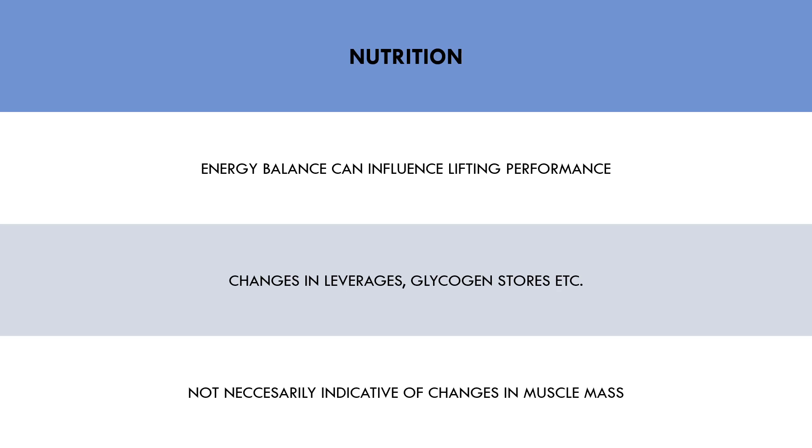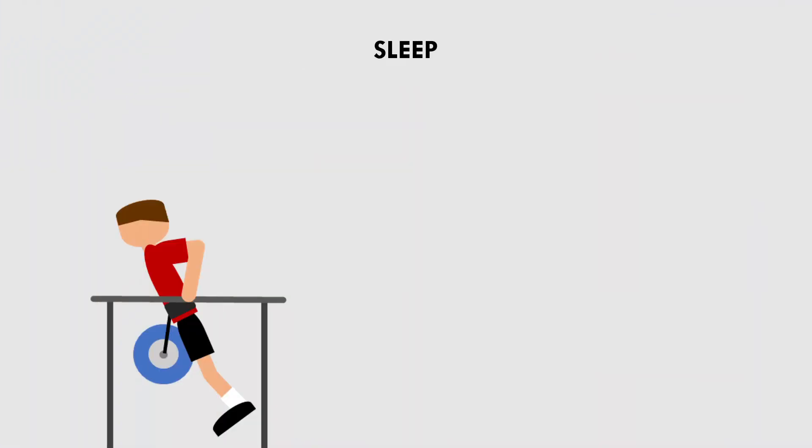And the last factor which can influence lifting performance in the short term is sleep. While one night of poor sleep doesn't seem to impact performance too much, a few nights in a row definitely can. Therefore, if trainees have not been sleeping well for the past few nights, lifting performance is likely to be somewhat reduced compared when training in a well rested state. Once again, this is not necessarily indicative of changes in muscle mass, it is simply an acute variable that can result in changes in performance.